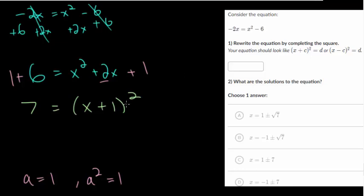And now to solve this, well, before we do that, let's write this into the box here. So you have x plus 1 squared equals 7.